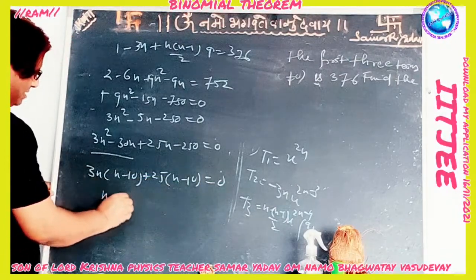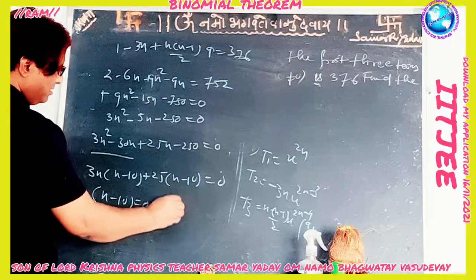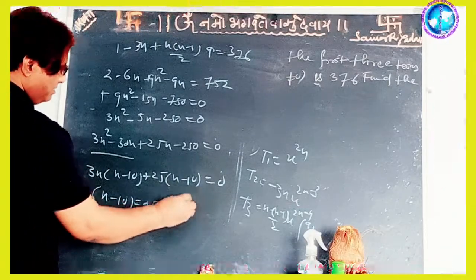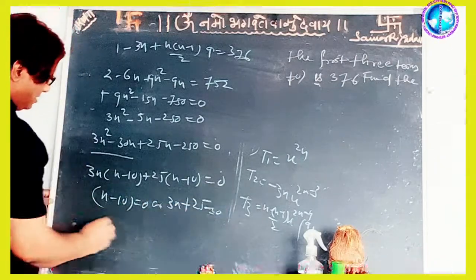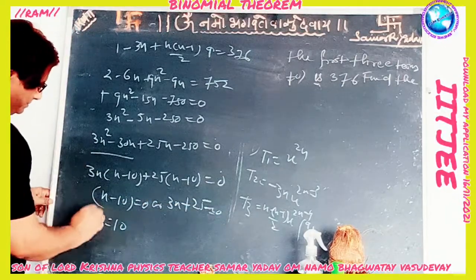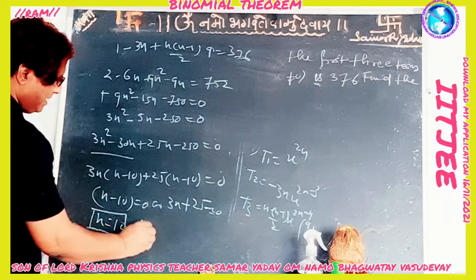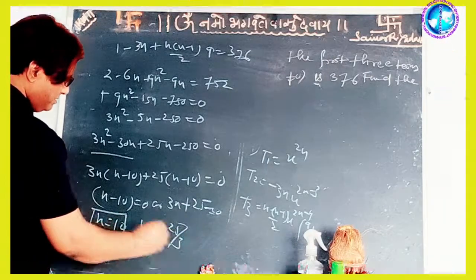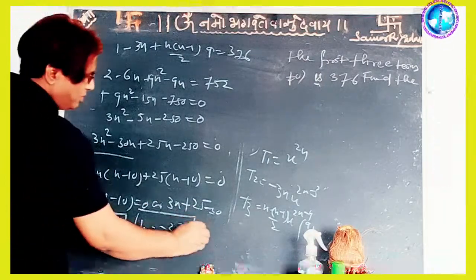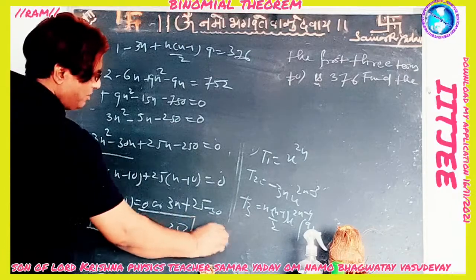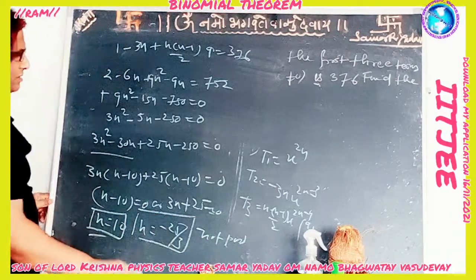So either (n - 10) = 0 or (3n + 25) = 0, giving n = 10 or n = -25/3. Since n = -25/3 is not possible, we get n = 10.